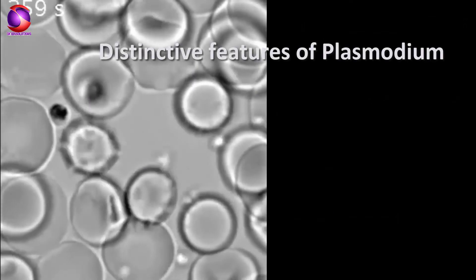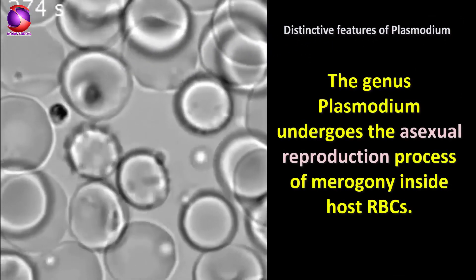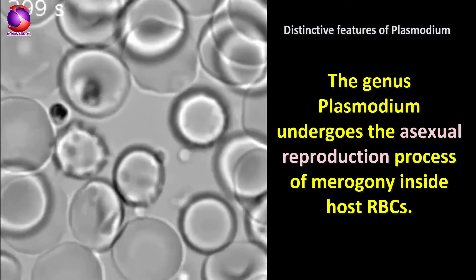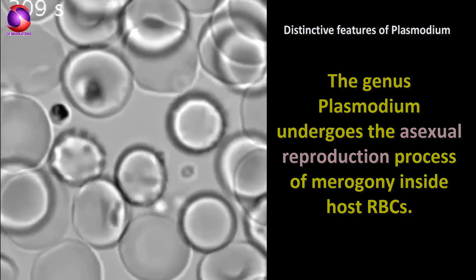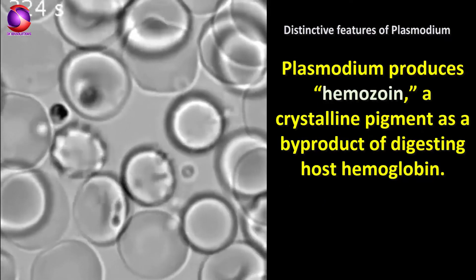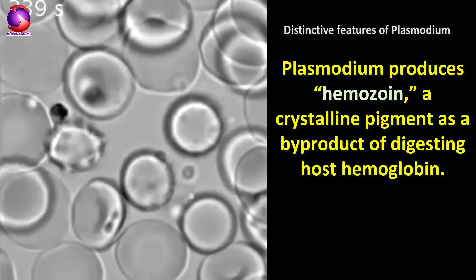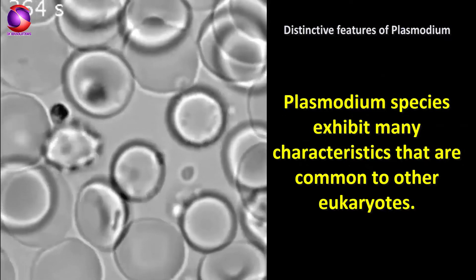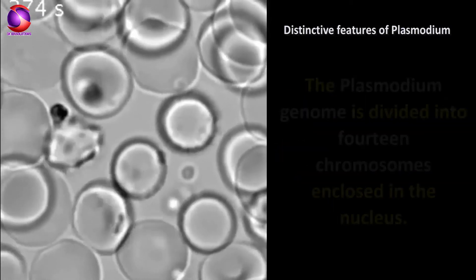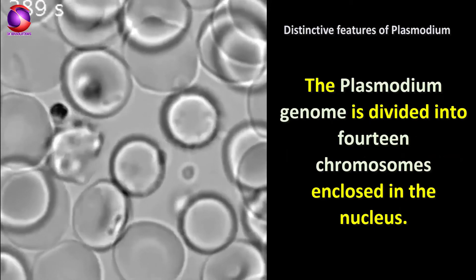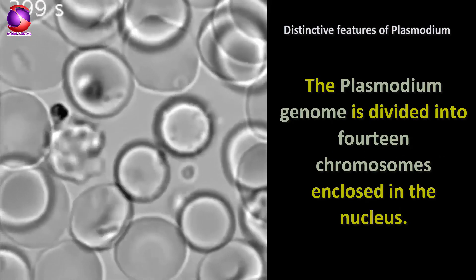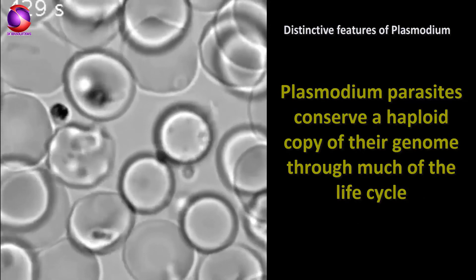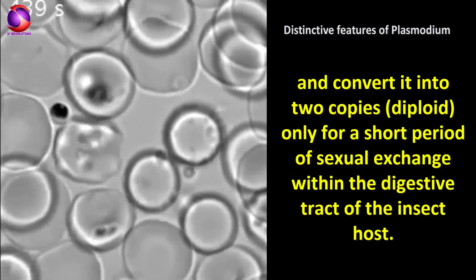Now we will see the distinctive features of Plasmodium. The genus Plasmodium undergoes the asexual reproduction process of merogony inside host red blood cells. Plasmodium produces hemozoin, a crystalline pigment, as a byproduct of digesting host hemoglobin. Plasmodium species exhibit many characteristics common to other eukaryotes. The Plasmodium genome is divided into 14 chromosomes enclosed in the nucleus. Plasmodium parasites conserve a haploid copy of their genome through much of the life cycle and convert it into two copies — diploid —